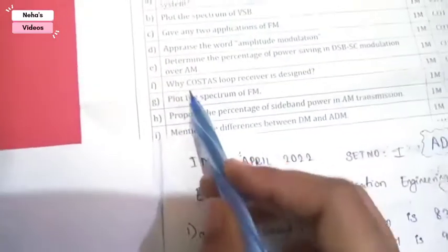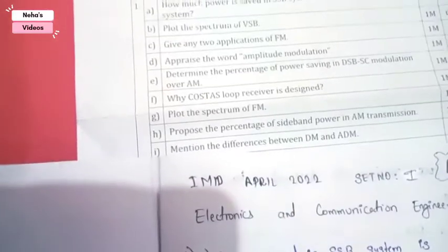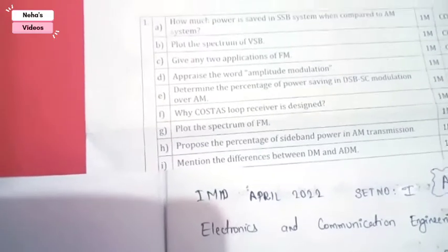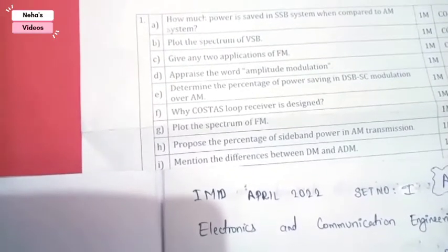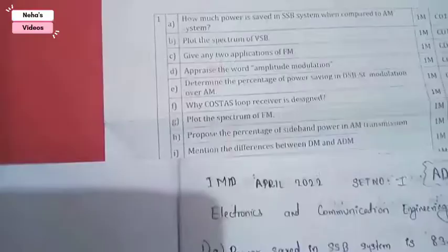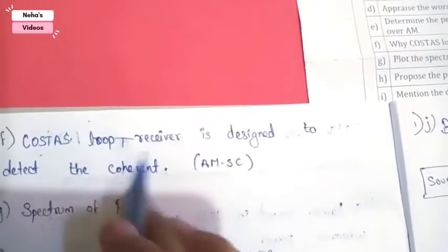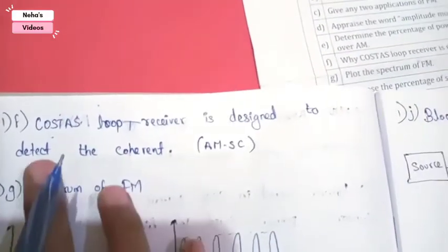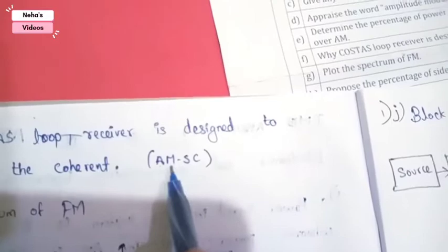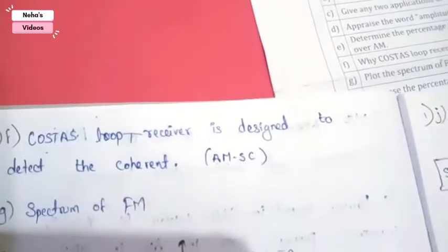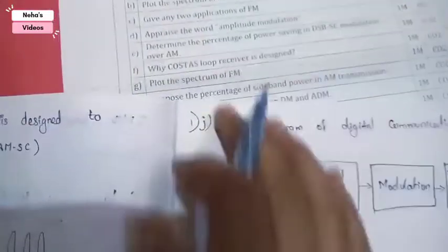It asks why Costas loop receiver is designed. The Costas loop receiver is designed to detect coherent signals. The answer is: Costas loop receiver is designed to detect the coherent in amplitude modulation suppressed carrier signal.